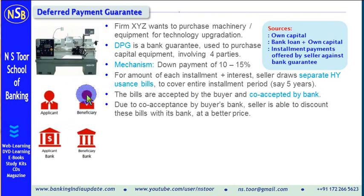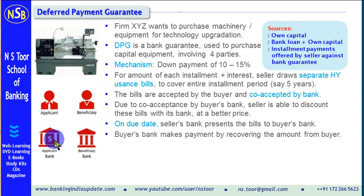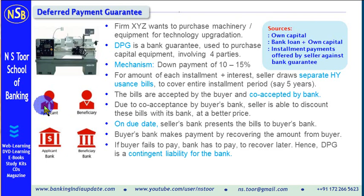Once these bills are accepted by the buyer's bank, they get a better credit rating and the seller is able to discount these bills with its bank. Hence, the beneficiary — the seller — can discount these bills at a better price. On due date, the seller's bank will present the bills to the buyer's bank for payment, and the buyer's bank will make payment by recovering the amount from the buyer. In case the buyer fails to make the payment, the bank has to make the payment, which it will recover later.